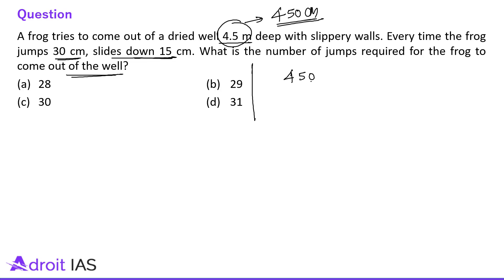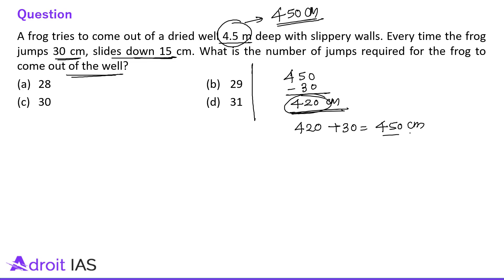One upward jump is 30 cm. So we consider 420 cm first — because when the frog is at 420 cm, it will take a jump of 30 cm and reach the top. After this, it won't slip down because it will be coming to the top. So we need to find how many jumps are required for the frog to reach 420 cm, and after that one more jump will be required to reach the top.